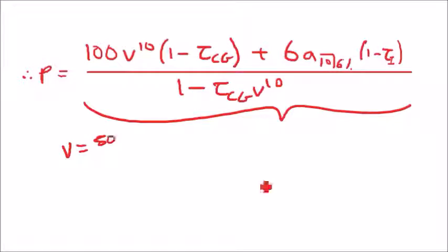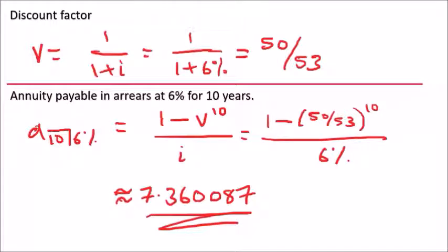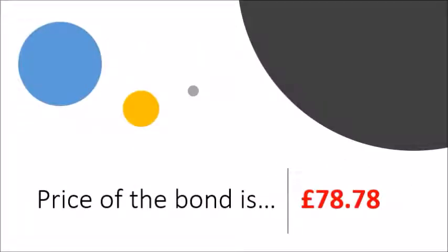Now plug in all your values. Recall that v equals 50 over 53, the capital gains was 30%, income tax was 40%, and the annuity itself was 7.36. Plug it in and you should get the price of the bond to be equivalent to £78.78. The bond is redeemed at £100, so yes, thanks to capital gains, you do actually make a gain.